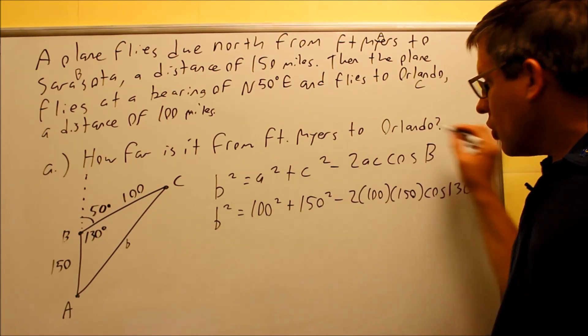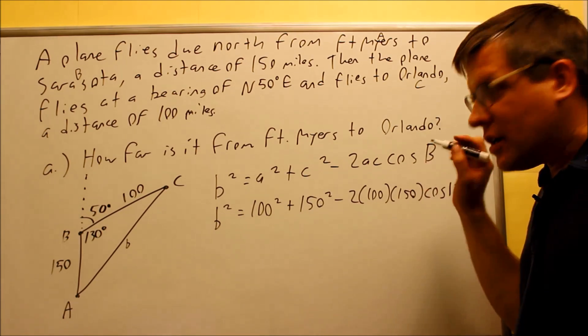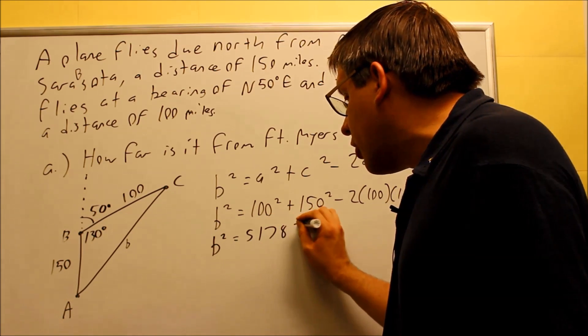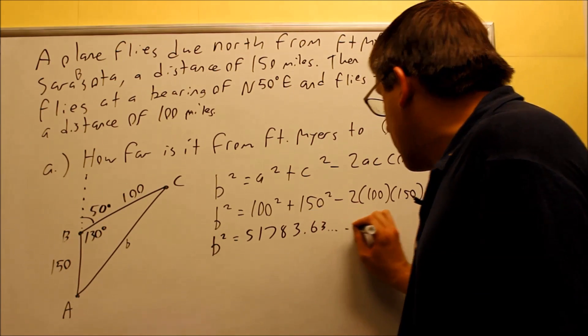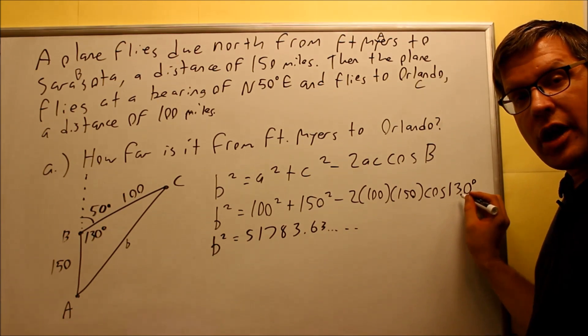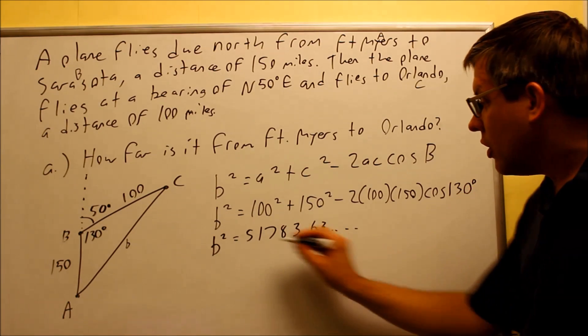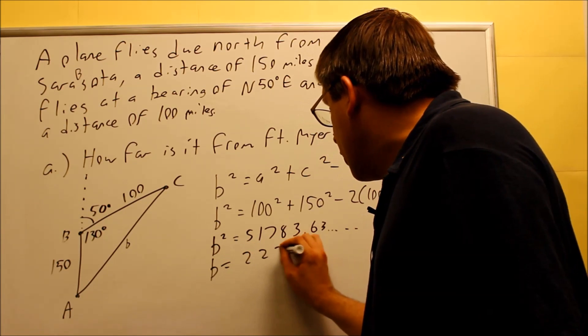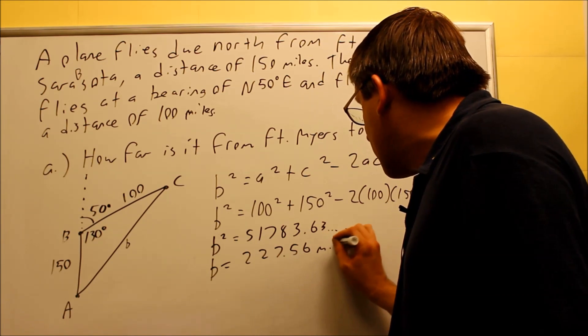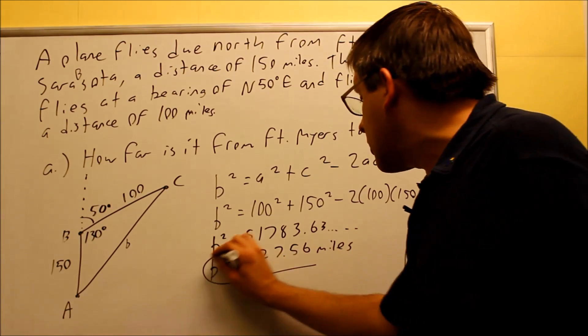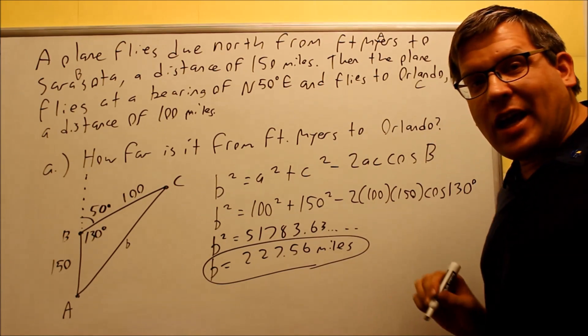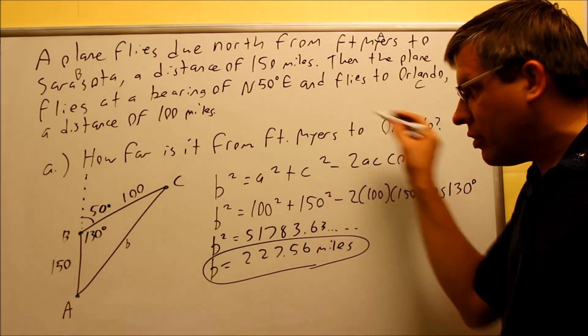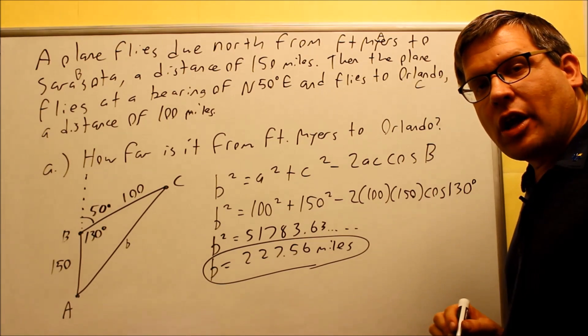This whole thing, you should be able to put that all into a calculator. I'm not going to show the individual steps here like I do in the notes, but I'll just give you the number that you're supposed to get as a result. If you put this whole thing with the 130 in there, put that in your calculator, make sure your calculator is in degree mode. You're going to get this number, it keeps on continuing. Don't forget to take the square root of both sides. And if you do, you get 227.56 miles. So this actually would answer part A. That's how far it is from A to C, how far it is from Fort Myers to Orlando. Now let's take a look at part B.